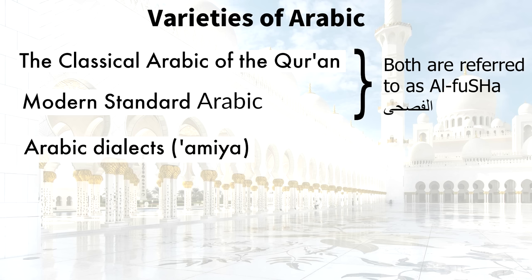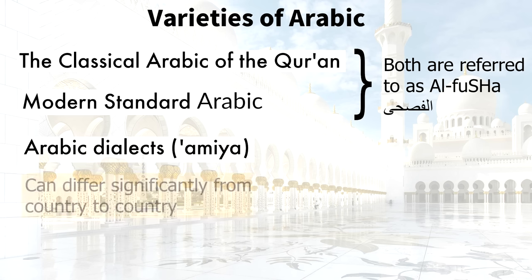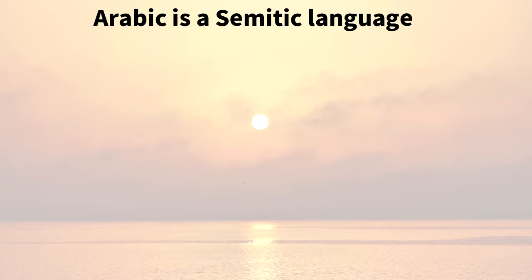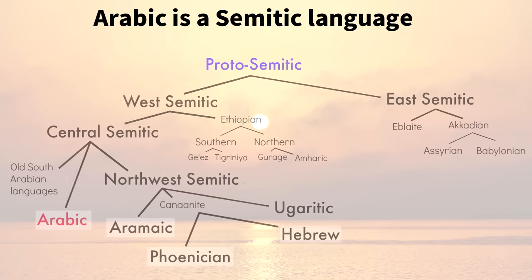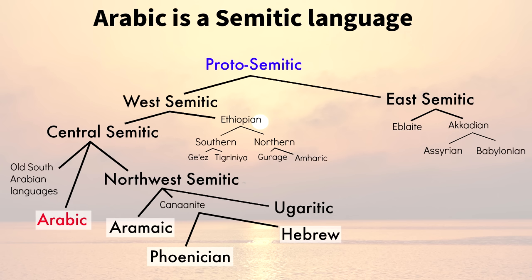For everyday speech, Arabic speakers use their local dialects, which can differ quite significantly from country to country, and even from one place to another within a single country. Arabic is a Semitic language. Arabic and other Semitic languages like Hebrew, Aramaic, and Phoenician all developed from the same Proto-Semitic language. Arabic forms one branch of Central Semitic, while another branch includes Hebrew, Aramaic, and Phoenician.